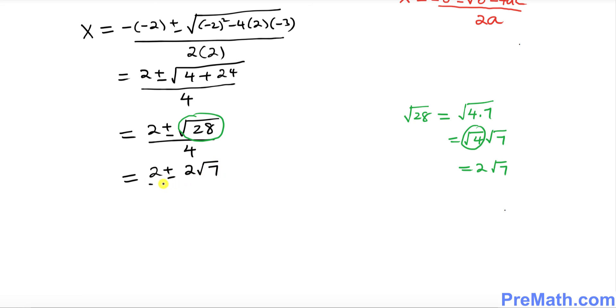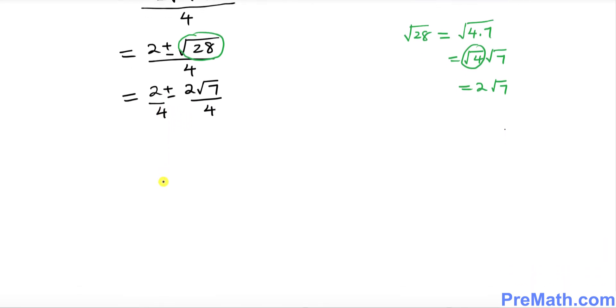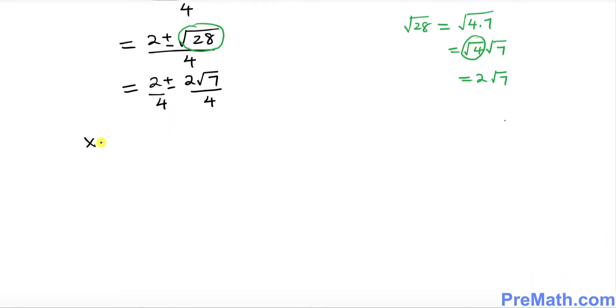I can split the 4: 2 over 4 could be reduced to 1 over 2, ± √7 over 2.